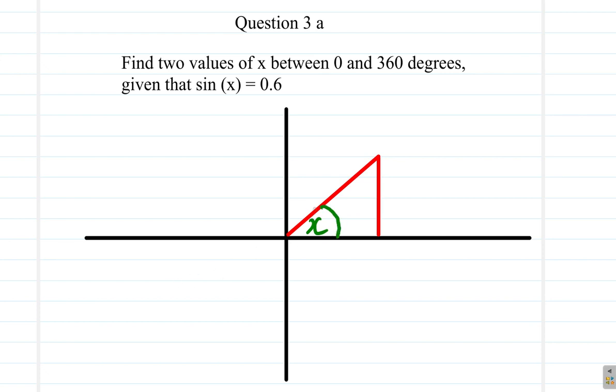The sine of x is opposite over hypotenuse. So, let's call the hypotenuse H and the opposite O. Or, let's call it Y. Or, what should I call it? Yeah, call it O.